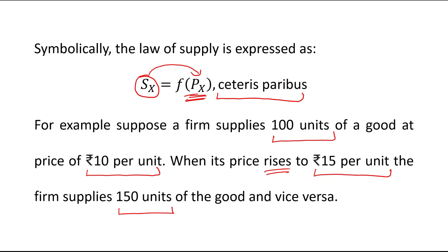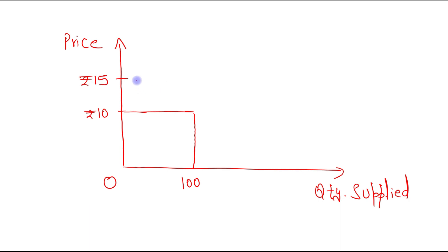We can understand this diagrammatically as well. It's simple. Just draw two axes. On the vertical axis, take price. On the horizontal axis, take quantity supplied. Take it as origin. When the price is rupees 10 per unit, quantity supplied is 100 units. When price increases to rupees 15 per unit, quantity supplied also increases to 150 units.